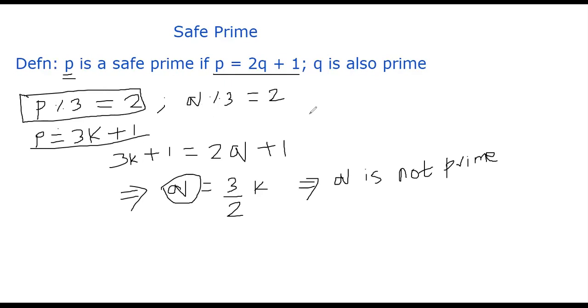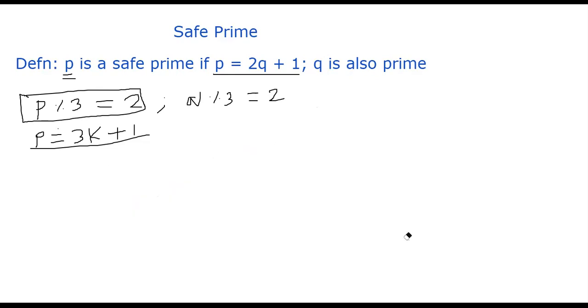Suppose q mod 3 is 1, so what can we do now? In that case, your q will be 3k plus 1. Some k need not be exactly the same k, but it could be some k. Don't confuse this k and k. I can just forget about this for a moment. So q is 3k plus 1, right? Now let's go and put this over to the safe prime formula.